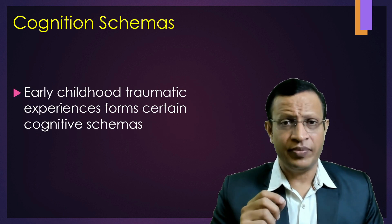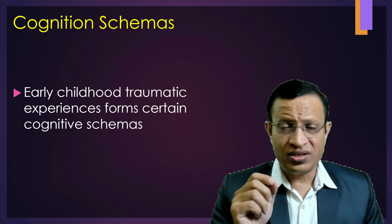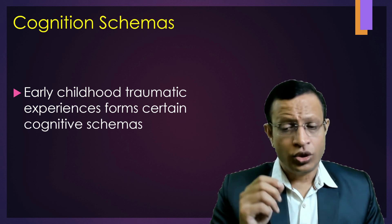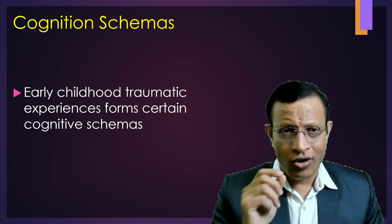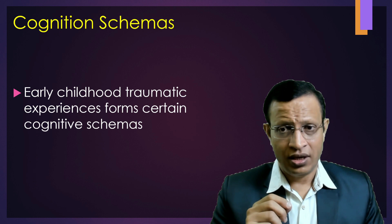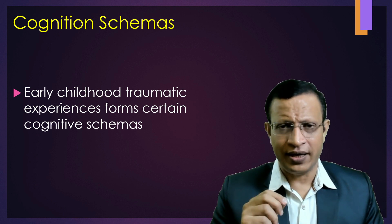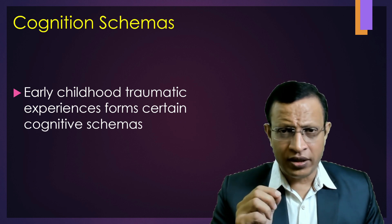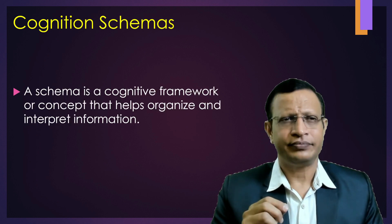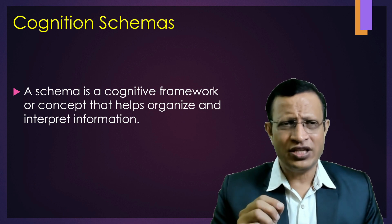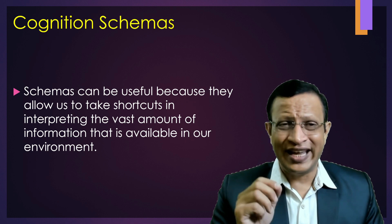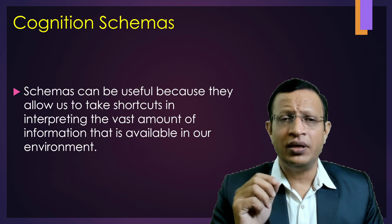And there are cognitive schemas. To assimilate or to process the events around us, because every minute we are getting thousands of information from our surroundings, some schemas are formed to interpret the cognitions. In early childhood, traumatic experiences form cognitive schemas. A schema is a cognitive framework or concept that helps to organize and interpret information in milliseconds. Schemas can be useful because they allow us to take shortcuts in interpreting the vast amount of information available in our environment.